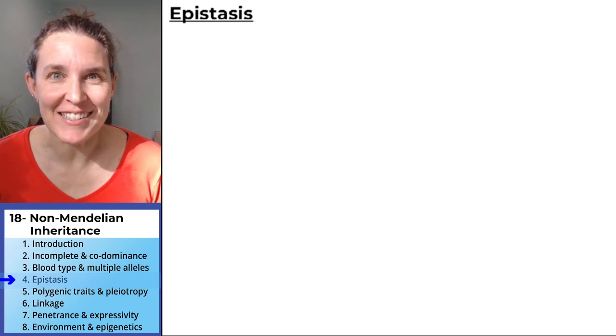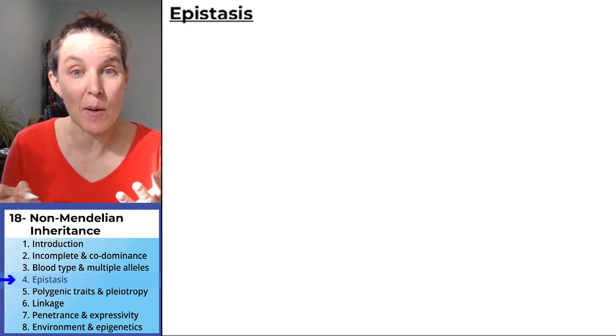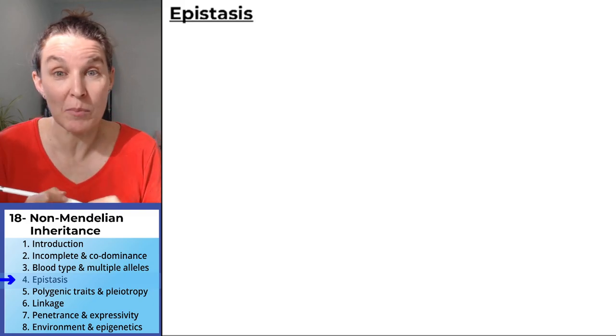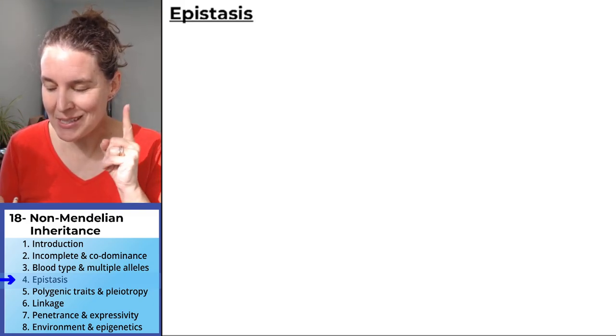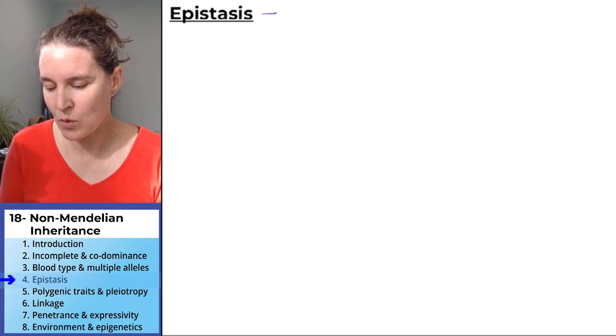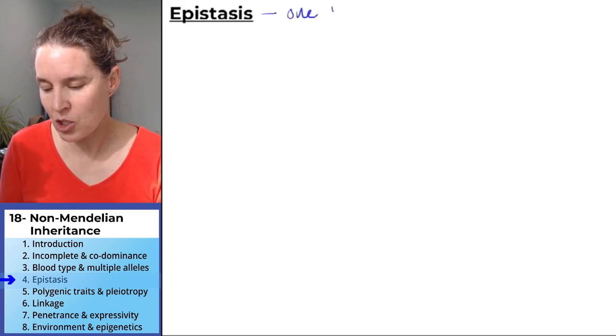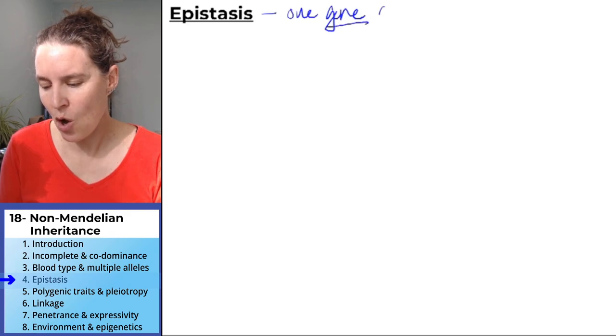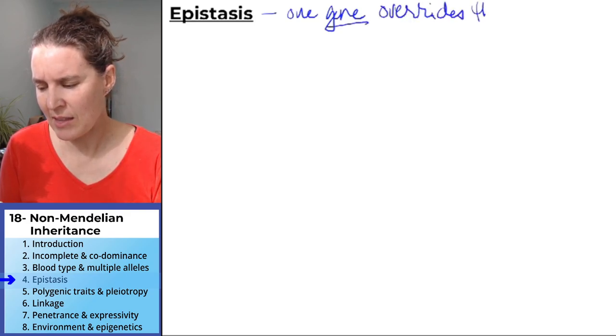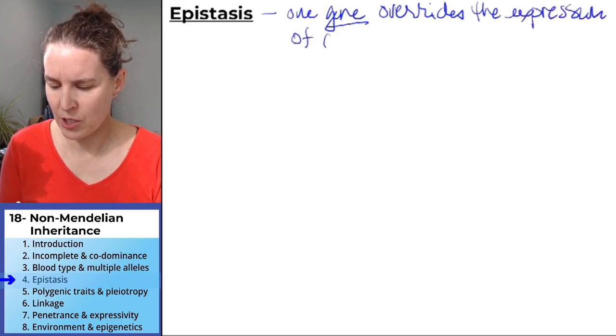The good news is epistasis, our example, is going to rely on blood typing, which we just talked about. So epistasis is a phenomenon that happens when one gene overrides the expression of another gene.